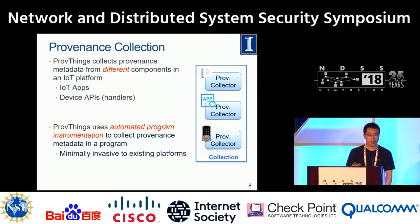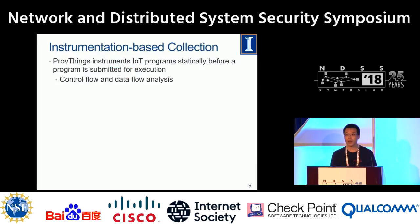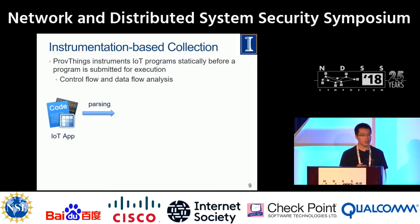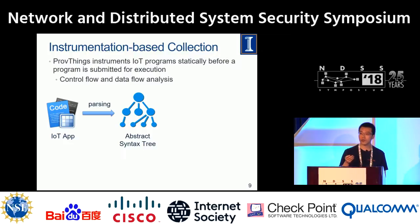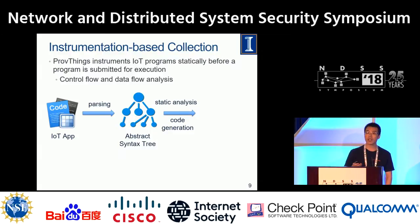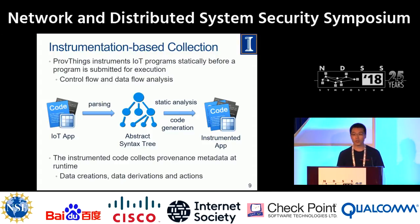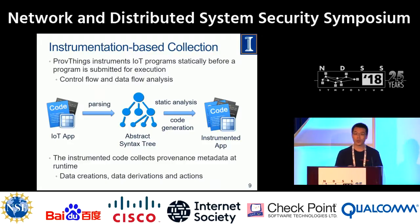For instrumentation-based collection, we instrument code into the program before the program is submitted for execution. Given an IoT app, we first parse it into abstract syntax tree form. Then we perform static analysis on the AST, including data flow analysis and control flow analysis. We then generate instrumented code into the program, which is responsible for collecting data provenance about data objects — how data was created, derived to another object, and the activities in the program.